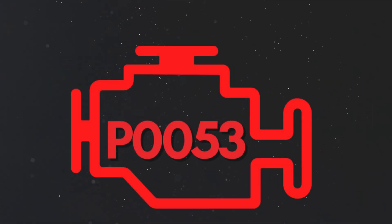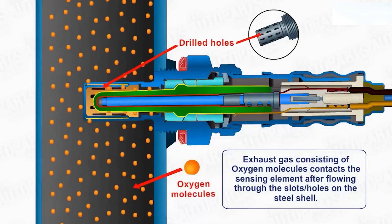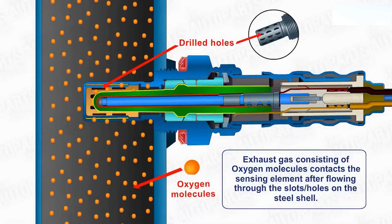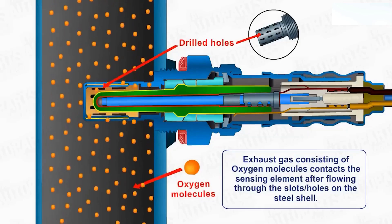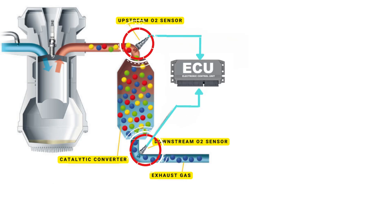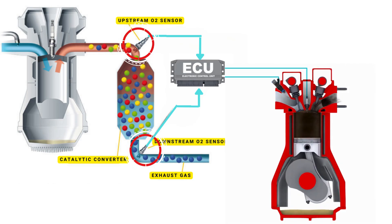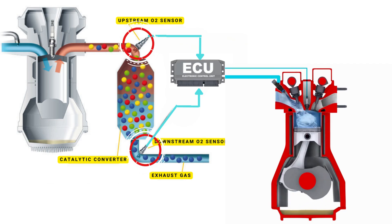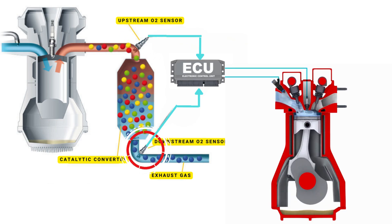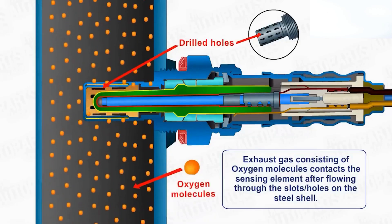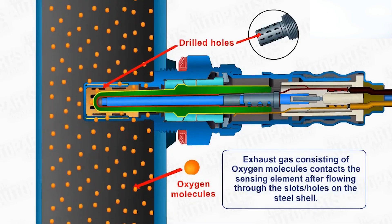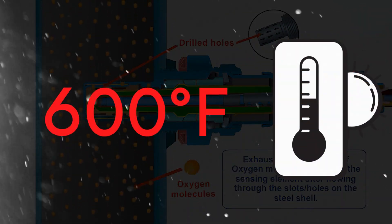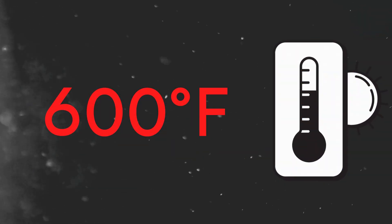Now let's learn why P0053 was triggered. Your vehicle's oxygen sensor plays a vital role in monitoring the oxygen content in the exhaust gases. It sends this data to the ECU, which then uses it to maintain the optimal air-fuel ratio. The ECU controls the air-fuel ratio by adjusting the timing of the engine's valves, allowing just the right amount of air and fuel to enter the combustion chamber. An oxygen sensor won't function correctly until it's heated to a certain temperature — around 600 degrees Fahrenheit for conventional sensors.